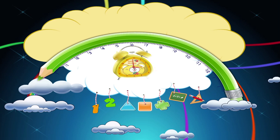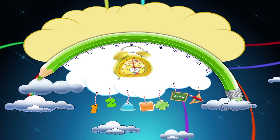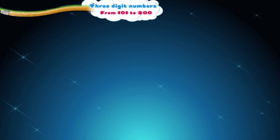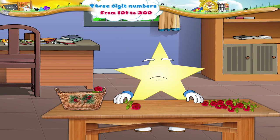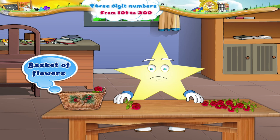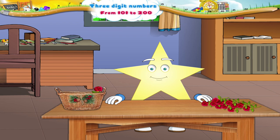Three-Digit Numbers: Numbers from 101 to 200. Hey Starry, why are you looking so confused? And what are you doing with this basket of flowers? Oh, you have to count these flowers and every time you keep forgetting the count. Don't worry, I will show you a simple method.